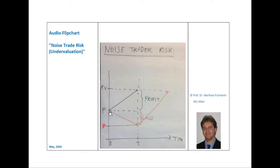For instance, it may happen, as shown in red, that irrational investors, so-called noise traders, independent of the high fundamental value, become even more pessimistic. As a result, they are selling the stock and thereby drive the price even further down to the level of the red P.